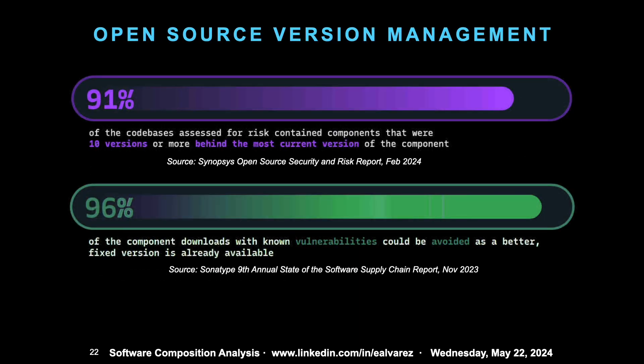We also have the issues associated with version management. Part of this from the Synopsys report shows that 91% were an average of 10 versions behind the current version. There's also data from Sonatype showing that, from Maven Central, 96% of the components with known vulnerabilities could have been avoided by using a fixed version. So a lot of this retrieval is coming from repositories of unpatched versions that could be patched.